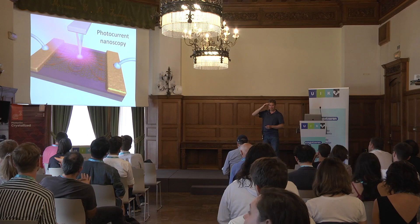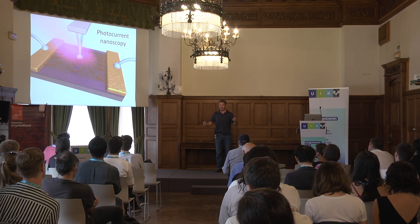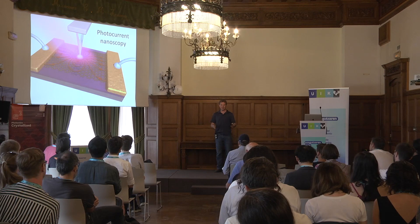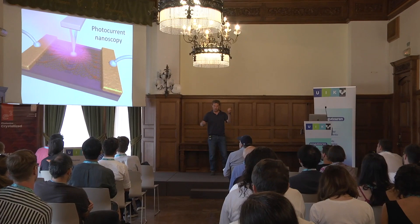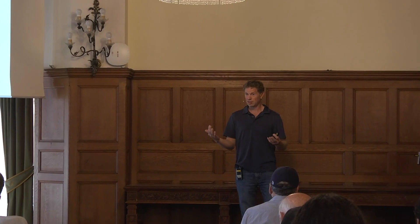It's actually easier to explain photocurrent nanoscopy than it is to explain photocurrent. Photocurrent means I shine light on a system and a current is generated. But the question is where is the light shining on the sample, because it's shining everywhere. Photons are hitting everywhere, generating at different locations electric fields and currents. There's a total current, so photocurrent is actually difficult to understand in detail.